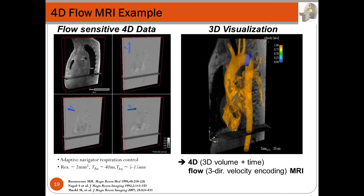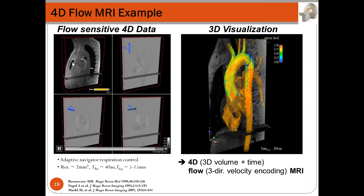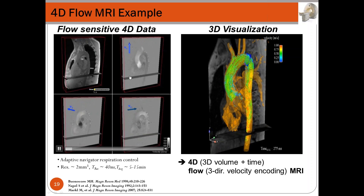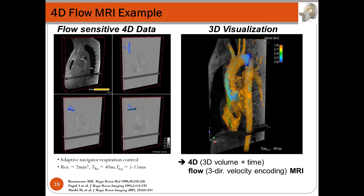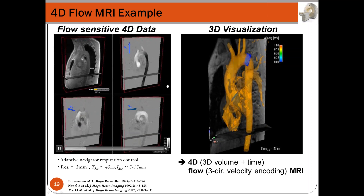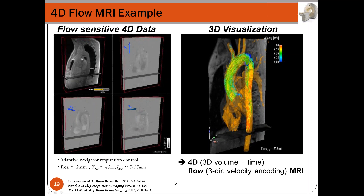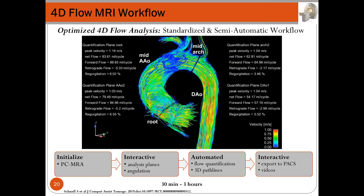However, the results are very good after completing all that work. Here is an example for a healthy control with 2 mm spatial resolution, 40 ms temporal resolution, and acquisition time of 5 to 15 minutes. We have a large amount of data with these acquisitions, so the best way to visualize information is using dedicated software for streamlines and pathlines. Here you can see an animation of particle traces along the cardiac cycle.